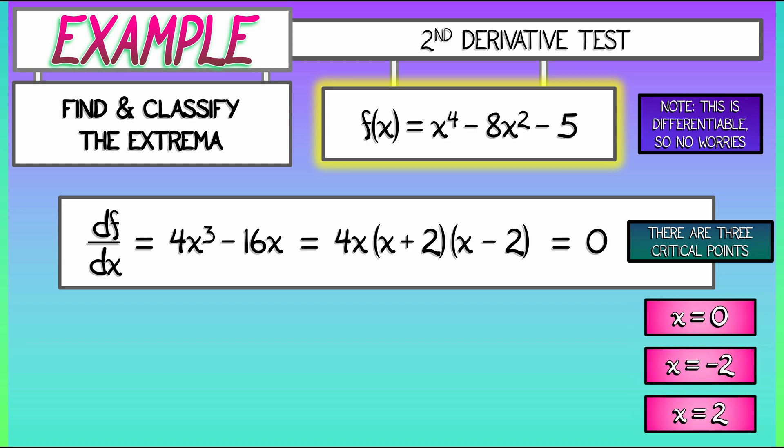To use the second derivative test, we need, of course, the second derivative. That is easily computed as 12x squared minus 16.